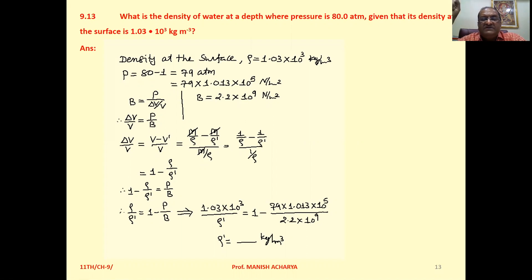For the fixed amount of water, the mass is constant. And if compression takes place, volume decreases, the density increases, and that density we want to calculate.